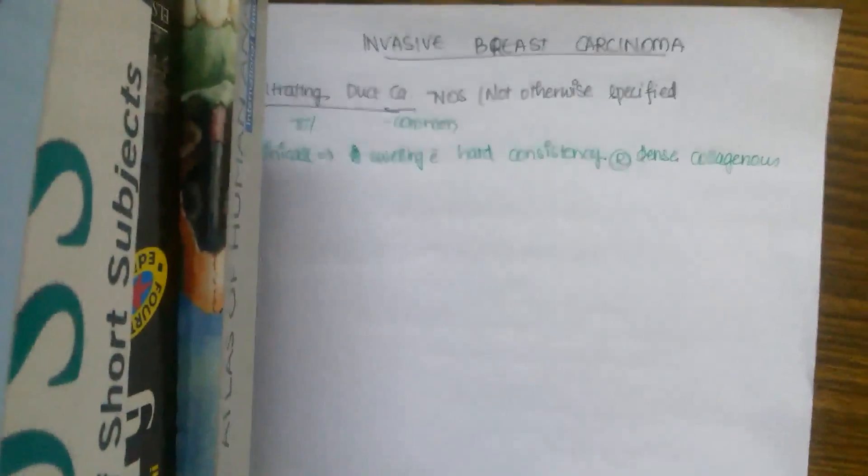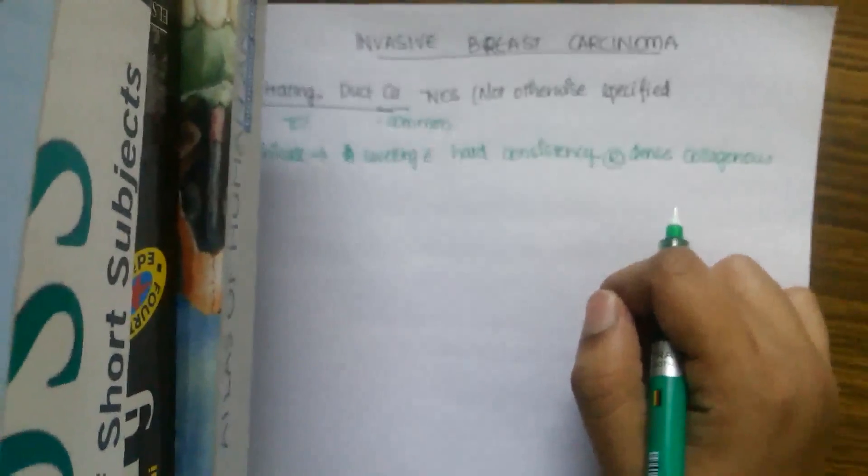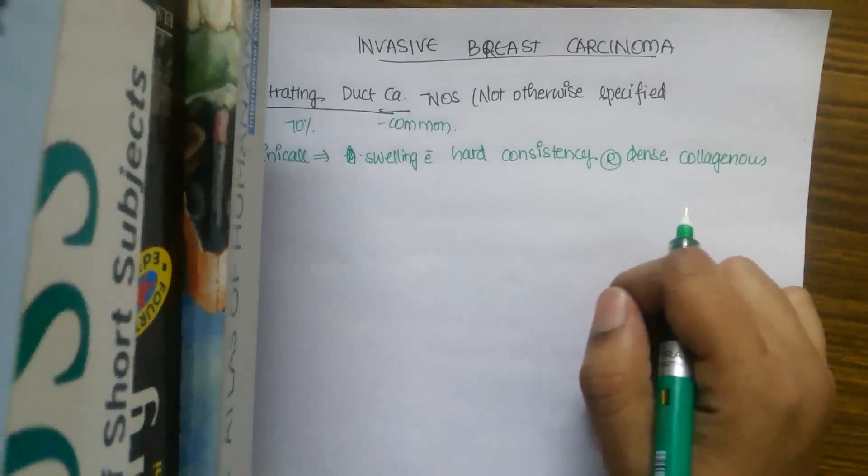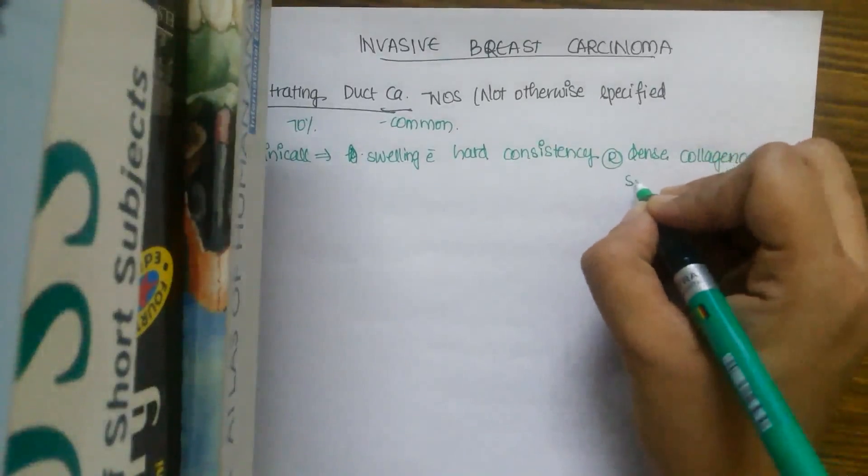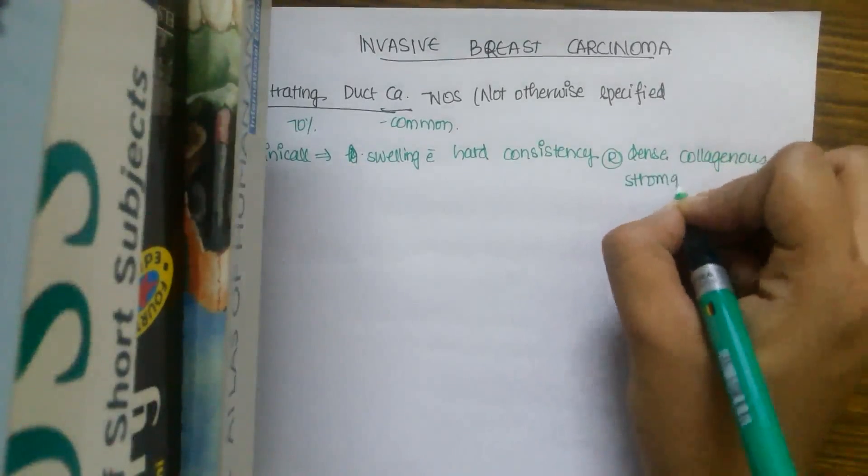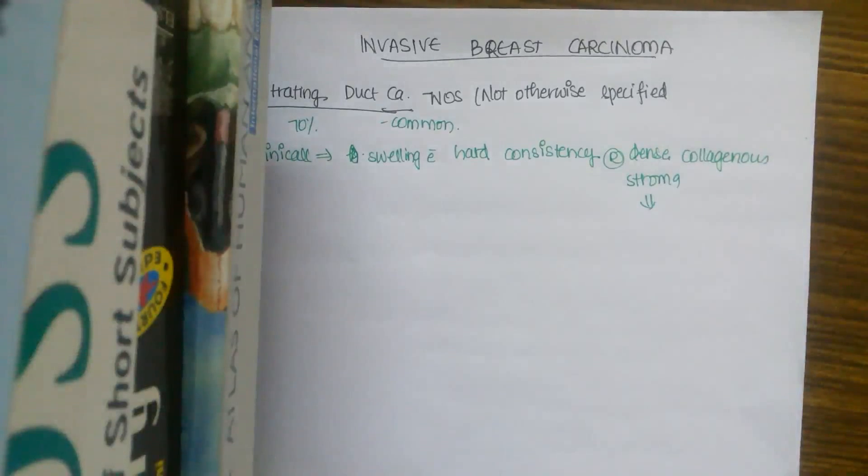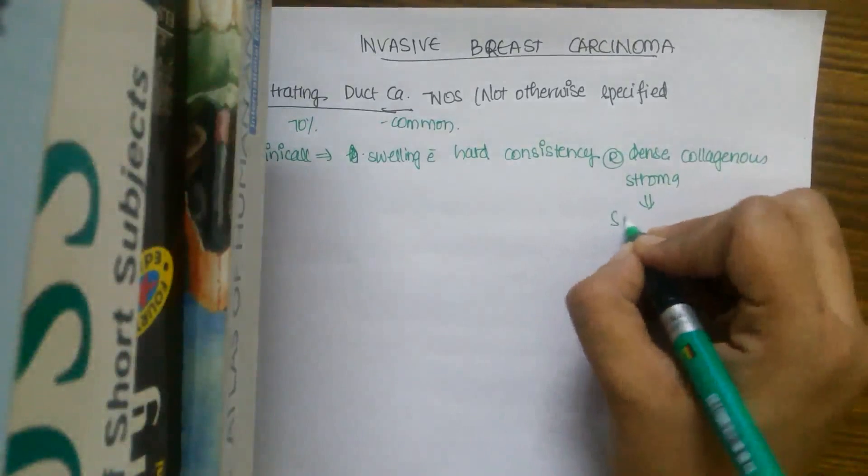Why is there hard consistency? It may be due to dense collagenous stroma. So this is called as cirrus carcinoma.